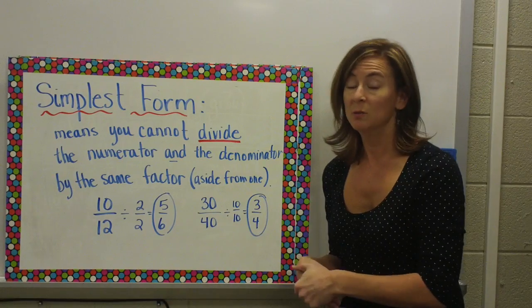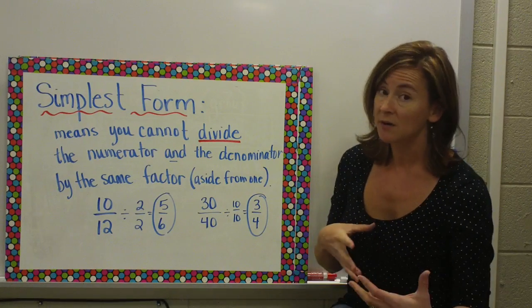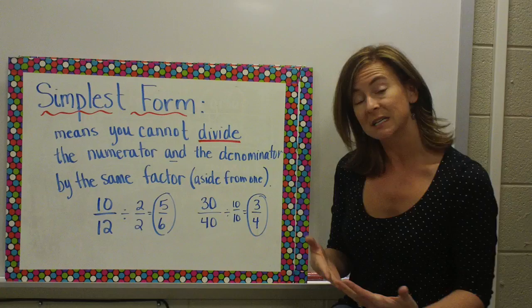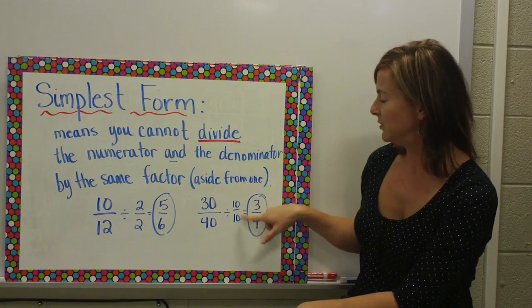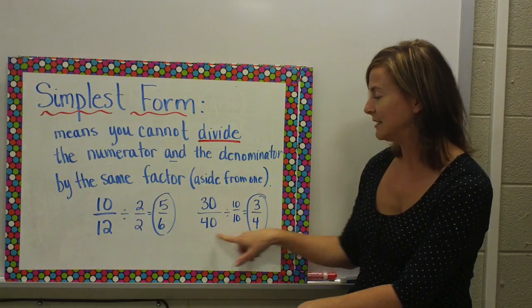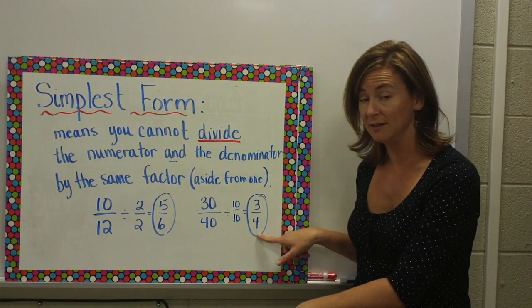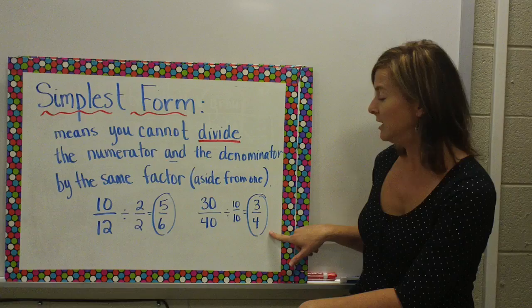One half of the candy bar was the same if I would eat four out of eight pieces, or if I would eat six out of twelve pieces. Same thing here. Ten over ten equals one. So, technically, the value isn't changing. I'm just writing it in a more efficient way.